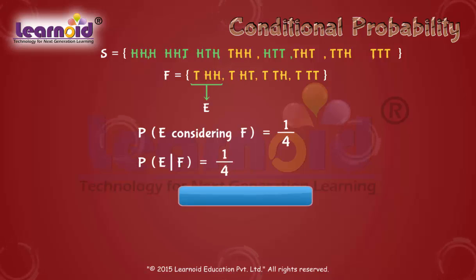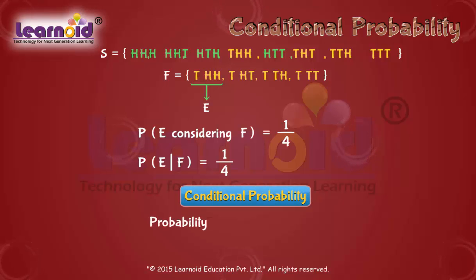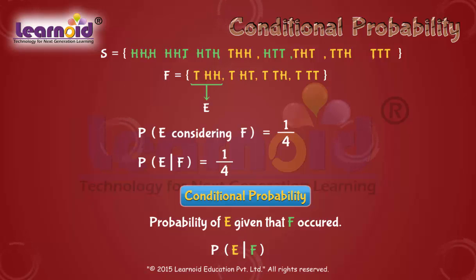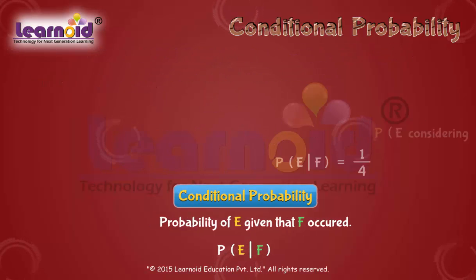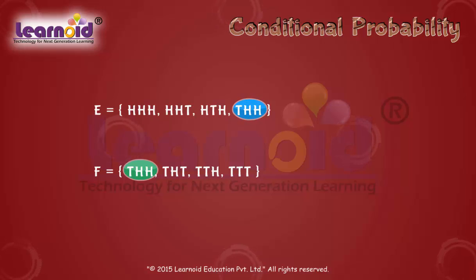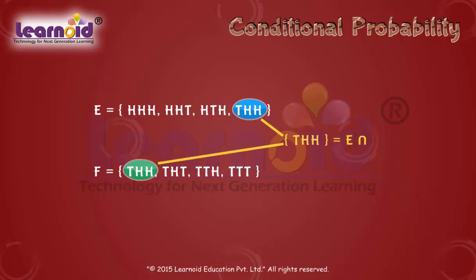This is called conditional probability. We have evaluated the probability of event E when event F occurred. It is denoted by P of E vertical line F. We can easily note that the elements of F which favor the event E are the common elements of E and F, that is the outcomes in E intersection F.